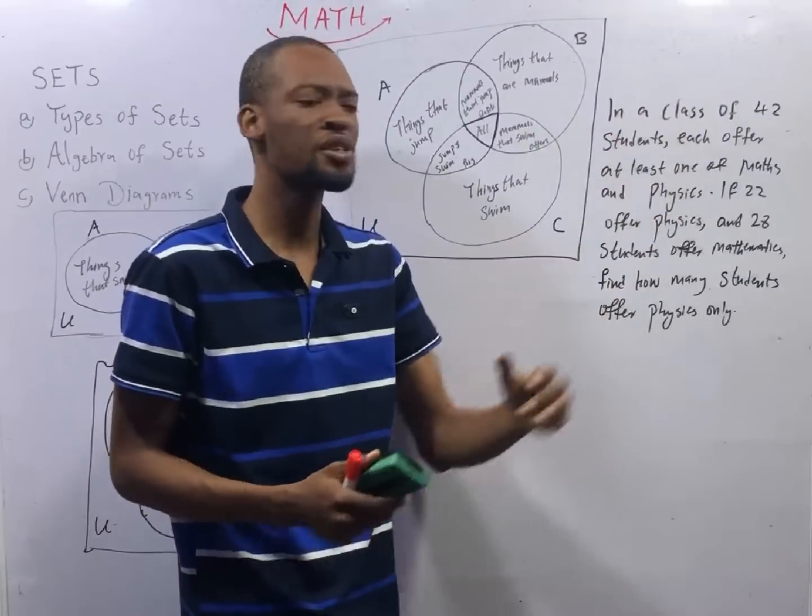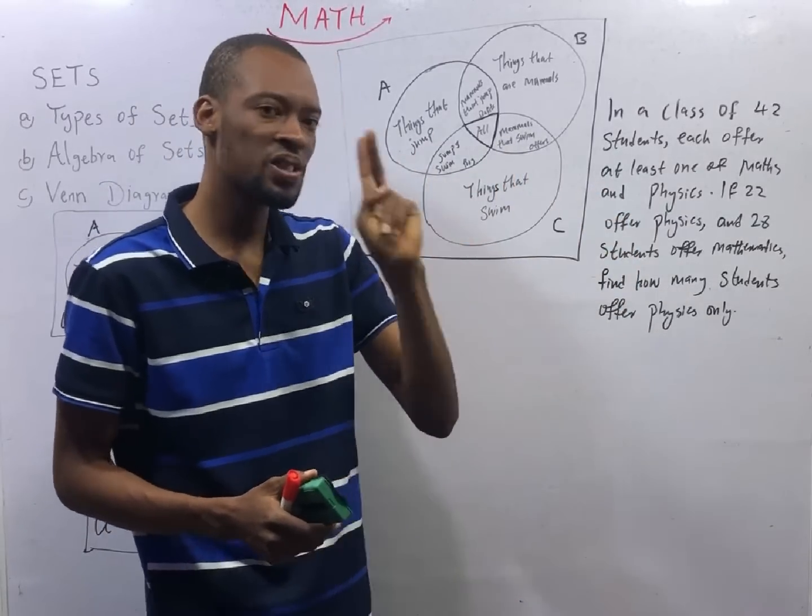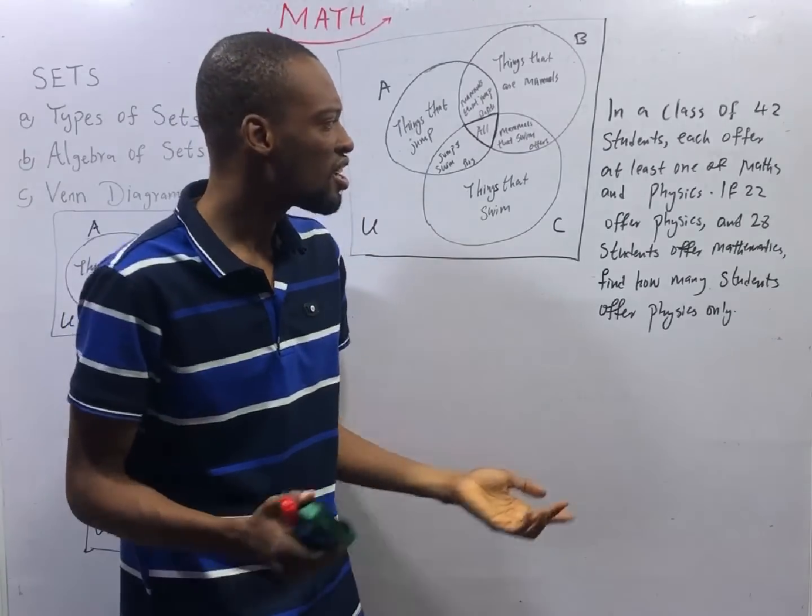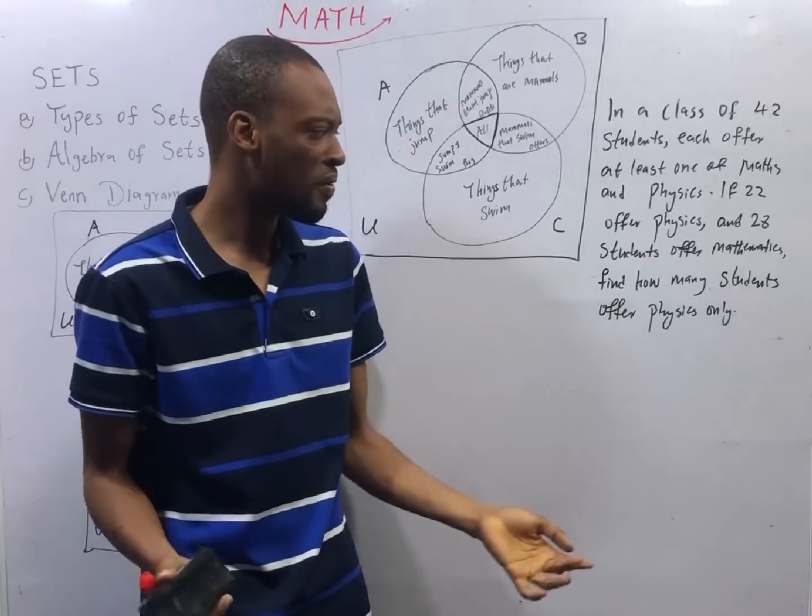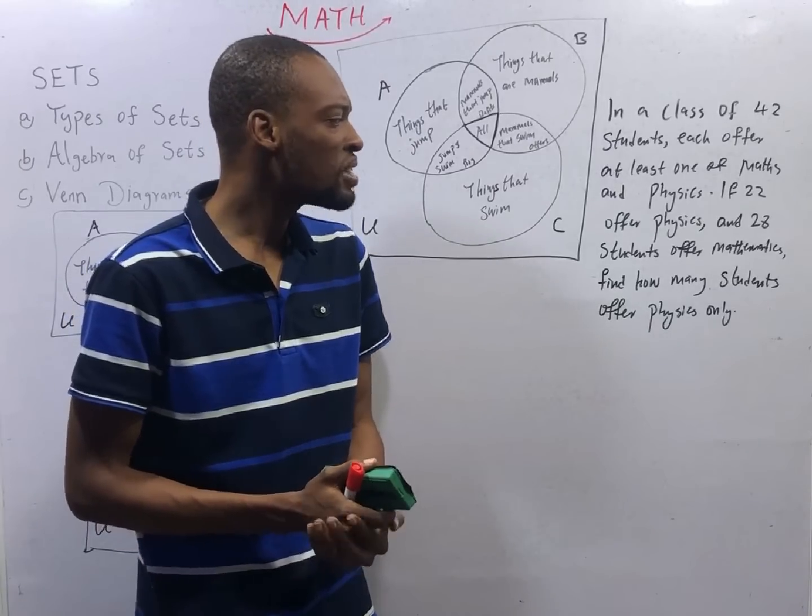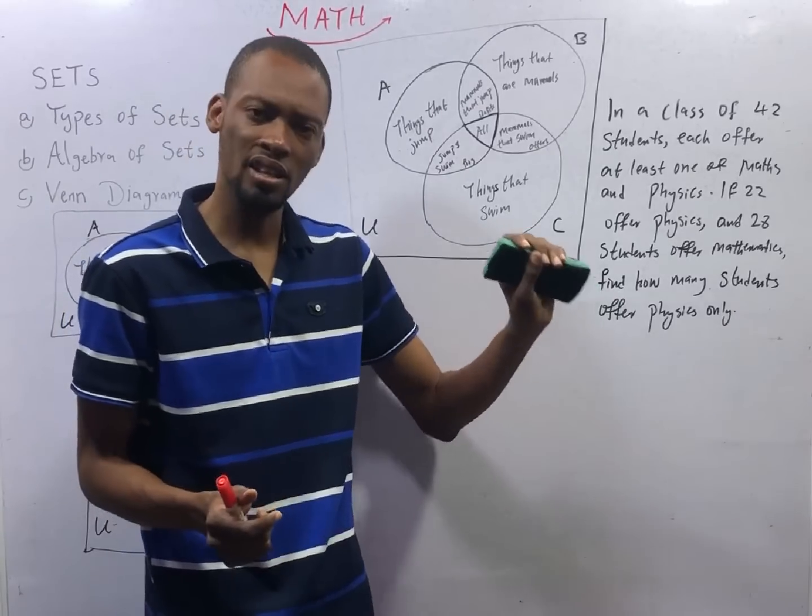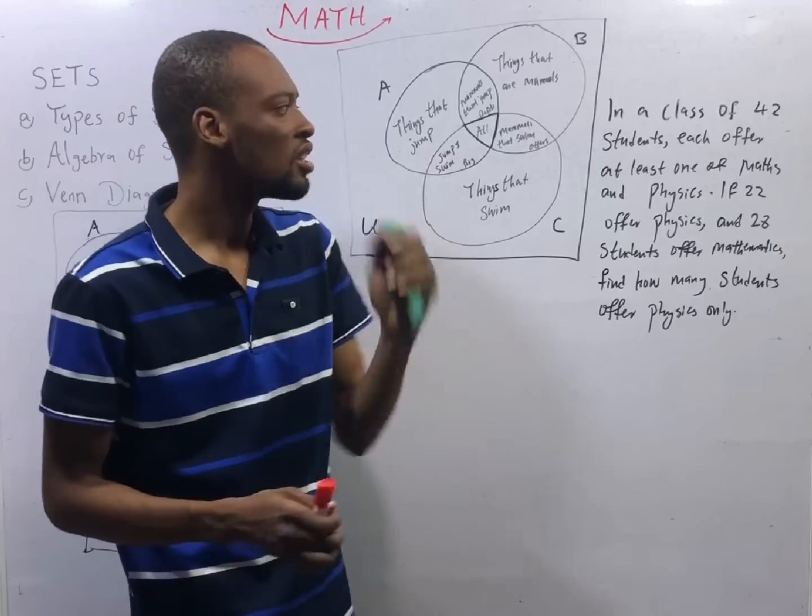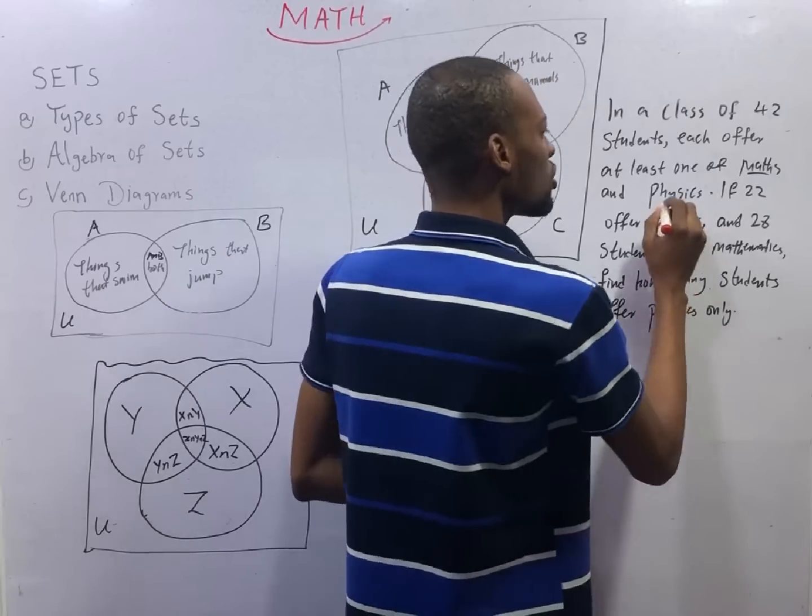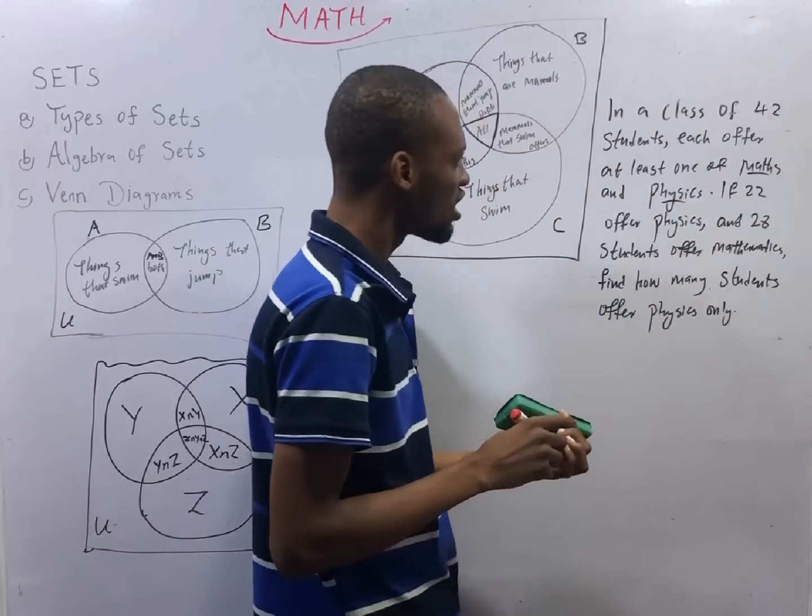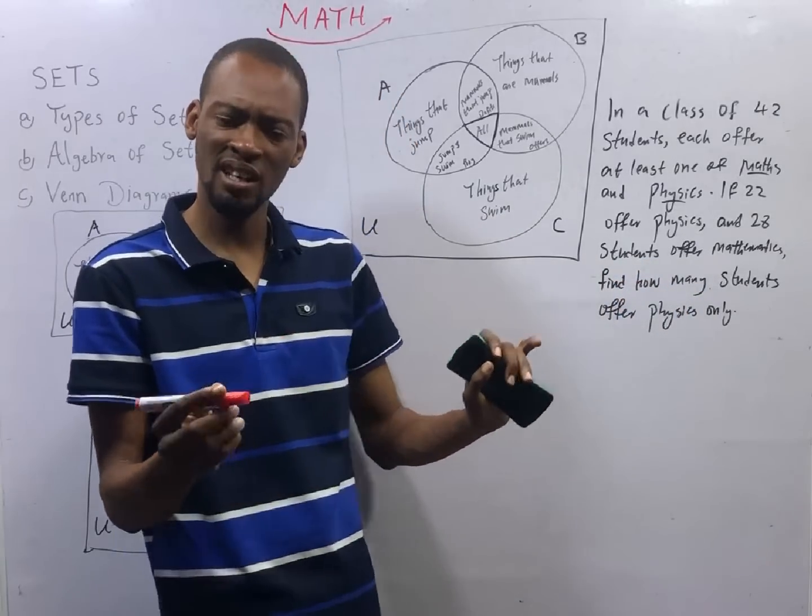Look at questions like this. In the class of 42 students, each offer at least one of maths and physics. If 22 offers physics and 28 students offer mathematics, find how many students offer physics only? If you look at this question carefully, you will see that we are dealing with two sets, set of those offering maths and those offering physics. Since we are dealing with two sets, we need to represent this in Venn diagram for better understanding.